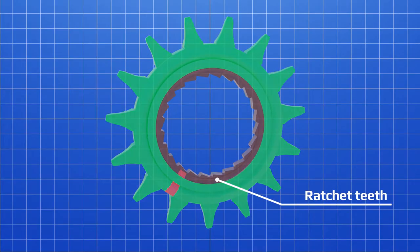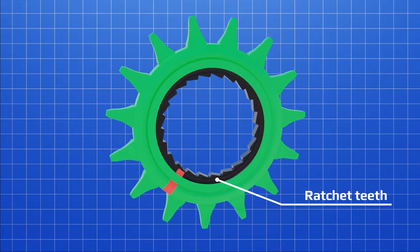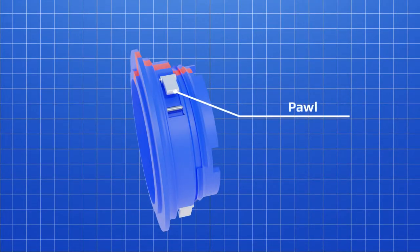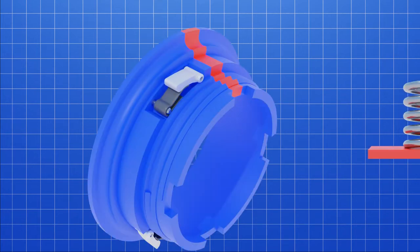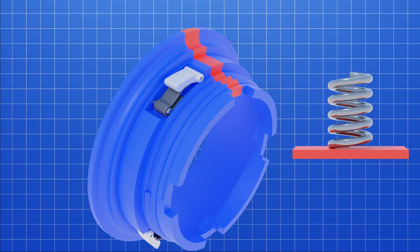At inner side, a ratchet teeth ring is fixed with the outer race. And the inner race is fitted with pawls. Pawls are spring-loaded. It can be a coil spring or spring plate.